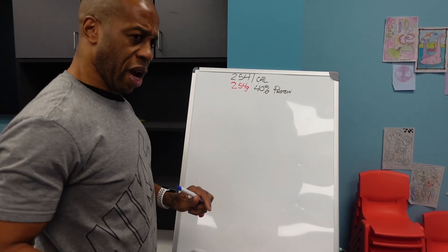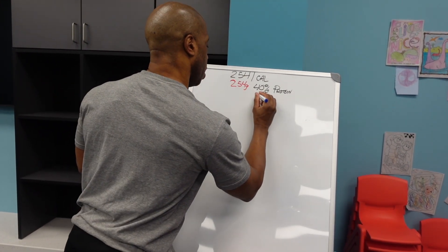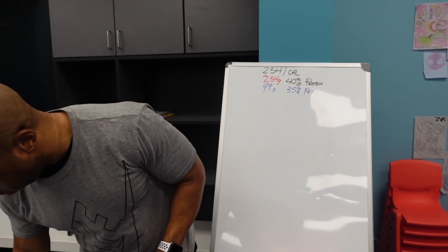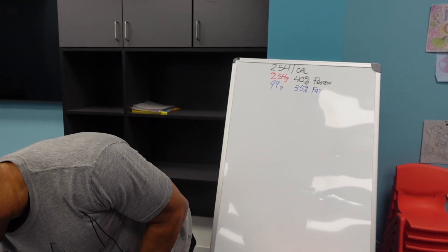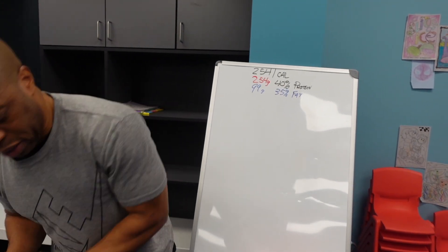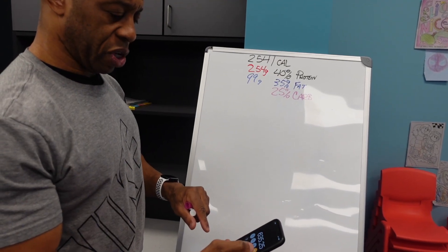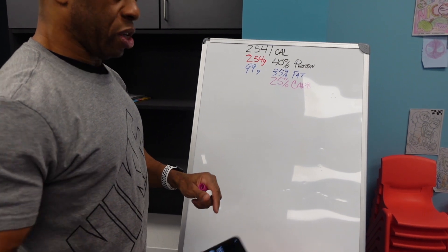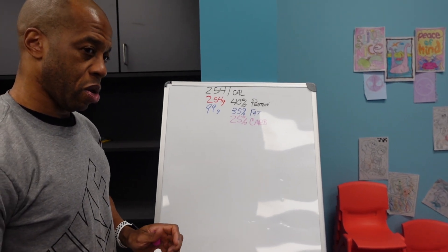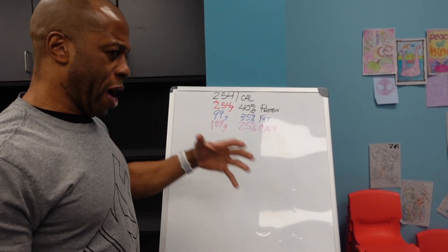That gives us 99 grams of fat at 35%. Then of course we figure out what's left for carbs. Your carb intake is 25%, which is 635 calories divided by 4, so that's 159 grams of carbs.